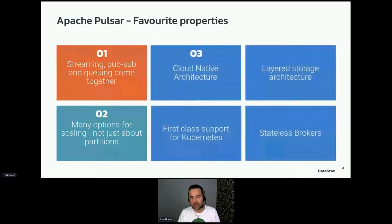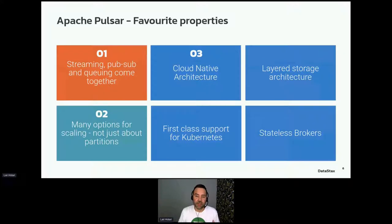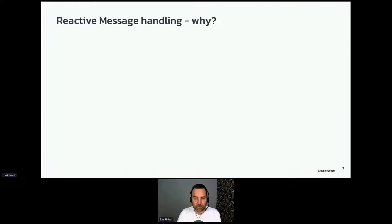The third area is that it's a cloud-native architecture with first-class Kubernetes support. From this cloud-native property, the brokers are stateless, achieved by a layered storage architecture powered by Apache BookKeeper. Because of this separation, the brokers and storage can be scaled independently.